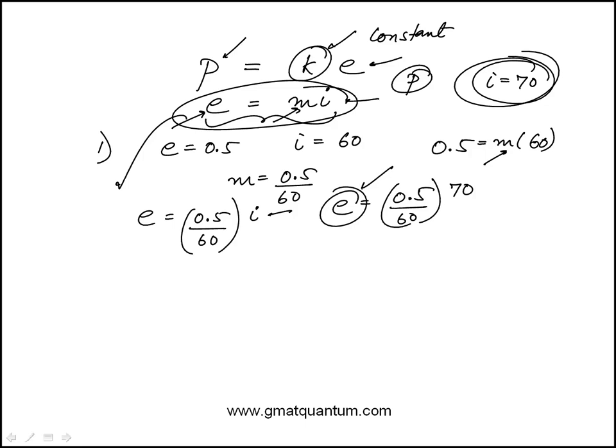I can find the efficiency index when the investment index is 70. But I still don't know what the production index is because I don't know this relationship here, what K is. So one alone is insufficient.